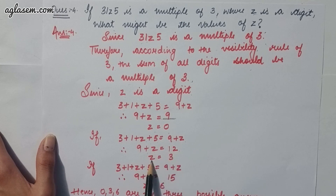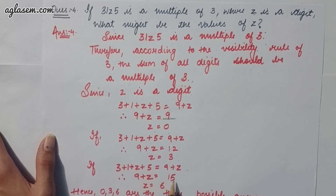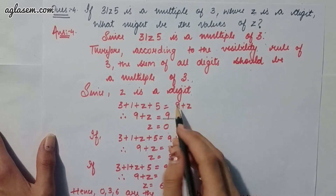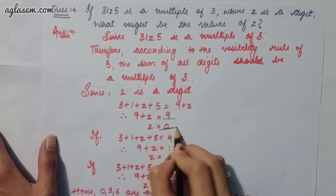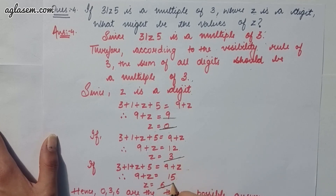In another case, 9 + z = 15 means z = 6. So the three possible values are 0, 3, and 6.